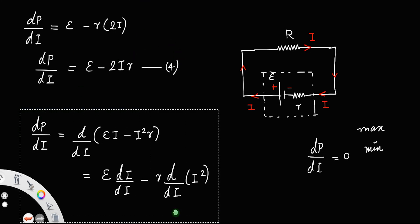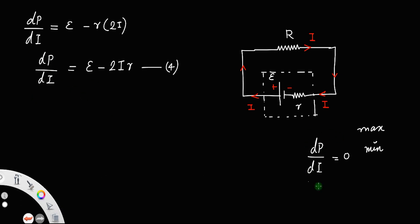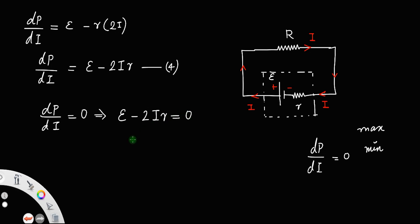As stated before, setting dP/dI = 0 means we equate E − 2Ir = 0, so that the power is maximum or minimum. This gives E = 2Ir — let us call that equation 5.